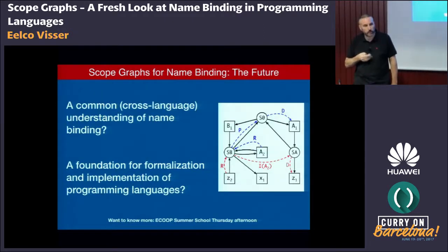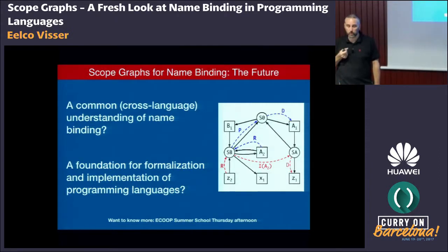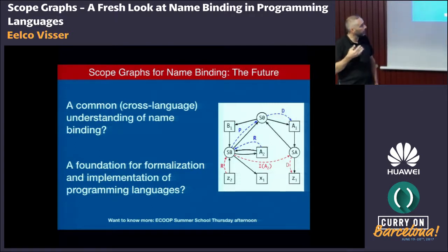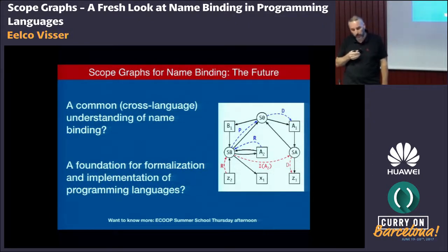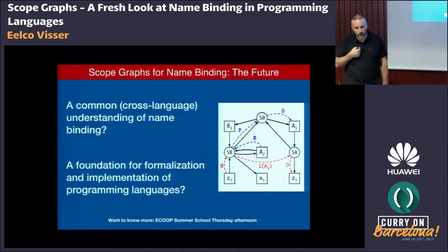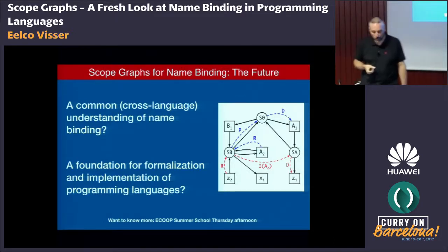To conclude, I've presented scope graphs as a solution for name binding. I hope this will provide a common cross-language understanding of name binding, and a foundation for formalization and implementation of programming languages. I would be very interested in your feedback, offline or otherwise. Thank you.